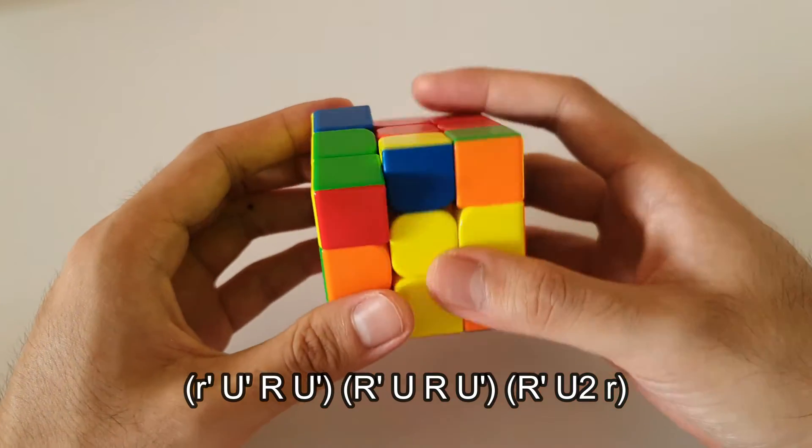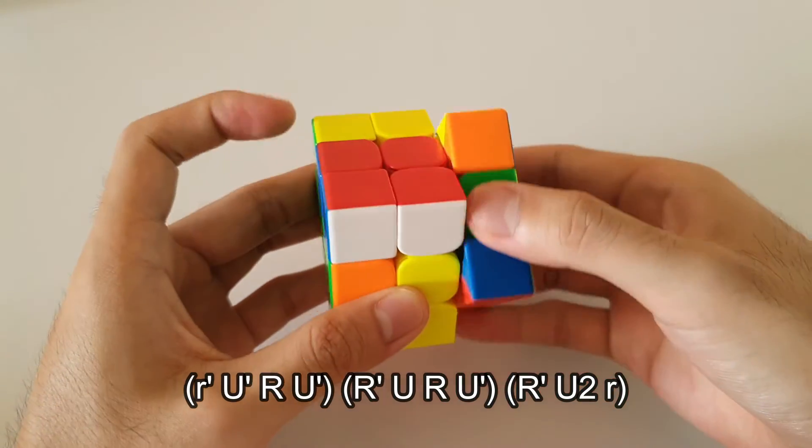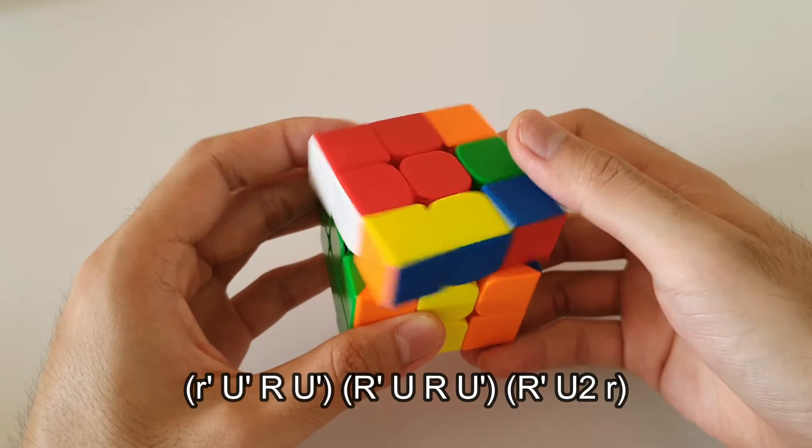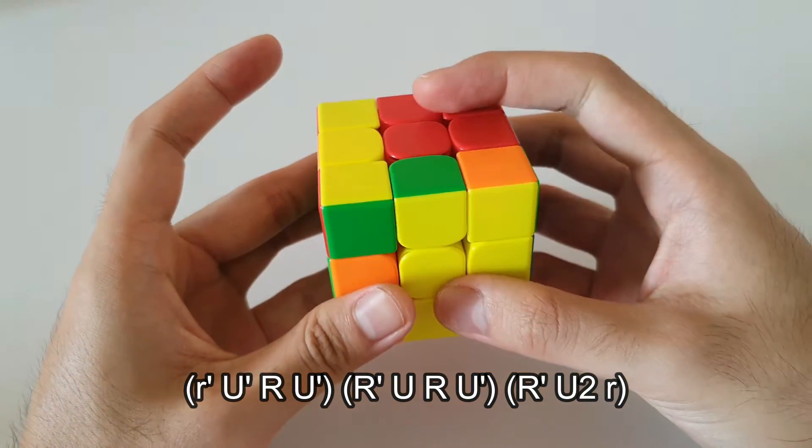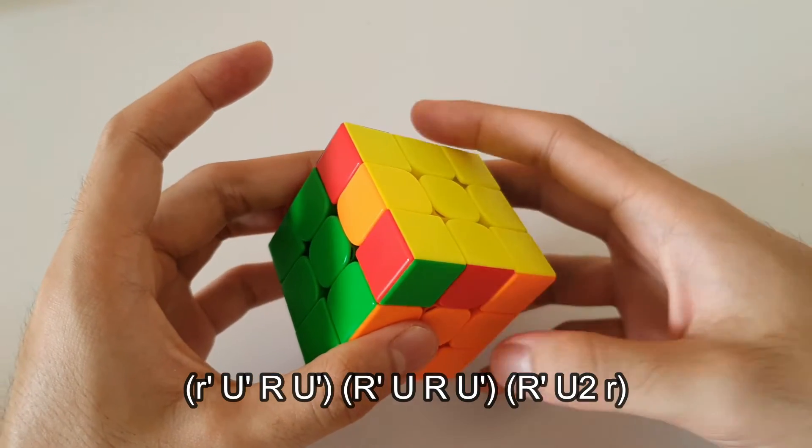So this is what the algorithm would look like. So wide R prime to begin with, two back soons, they sort of cancel out each other in the middle and at the end here, wide R move to finish off the algorithm.